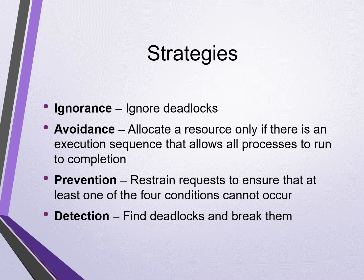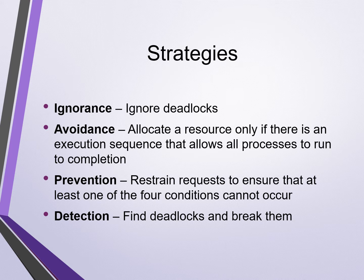So there are four strategies to handle deadlocks. The first one — ignorance, or just plain ignoring deadlocks — is obviously not a good approach, however it is an approach that apparently was not uncommon. Avoidance means properly allocating resources to ensure there is an execution sequence that allows all processes to run to completion. Prevention means the use of a technique that prevents one of the four conditions from occurring, such as restraining requests until all resources are available and then acquiring them simultaneously, which breaks the hold and wait condition. And finally, detection means allowing a deadlock to occur, and when it does, find it and break it.